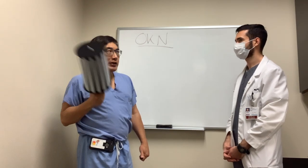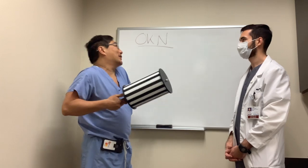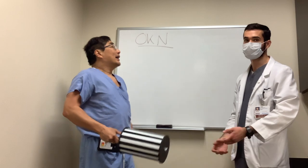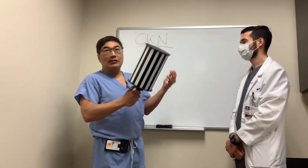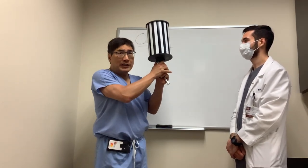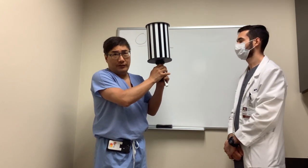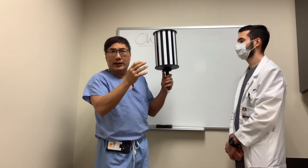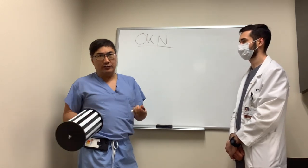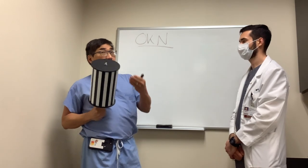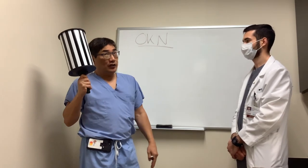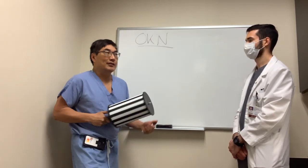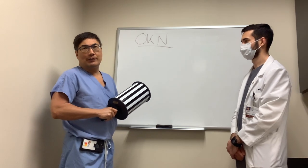For the afferent system, if someone claims they're completely blind — no light perception — when we spin this drum, if they truly can't see anything, their eyes won't move. But if they can see, as soon as I start spinning the drum the eyes will generate the OKN response. So it's one of the tests we use to detect non-organic patients, but only when their vision is terrible — you can't use this for 20/200 or 20/50 vision because they can still see the stripes at that level.